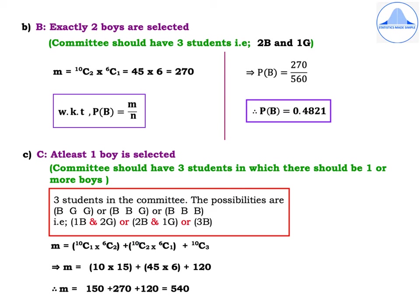Second subdivision, define event B as exactly 2 boys are selected. The committee should have 3 students, so if 2 are boys, the other student should be a girl — that is 2 boys and 1 girl. M = 10C2 into 6C1 = 45 into 6 = 270. P(B) = M divided by N = 270 divided by 560. Therefore, P(B) = 0.4821.